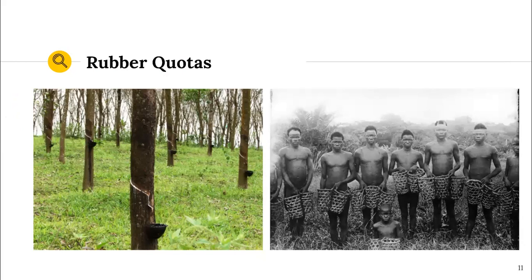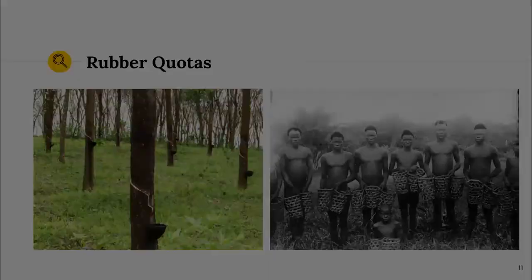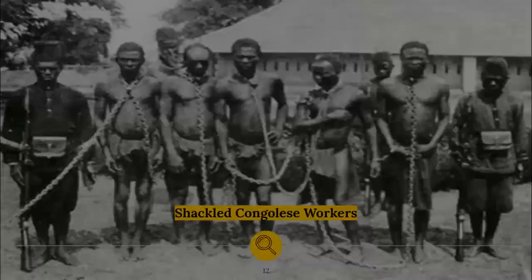These company officials and armed Congolese would approach a lone village, round up the villagers, and tell them they had to collect rubber — a certain quota in a specified amount of time. Every month, every person in that village would need to collect five or six pounds of rubber. If they met the quota, they would often be paid with meaningless, valueless trinkets.